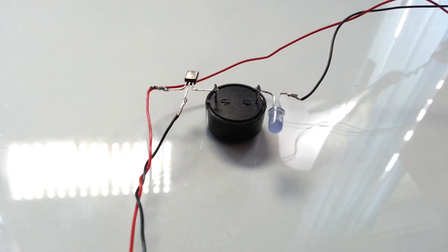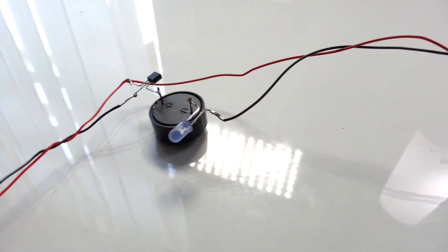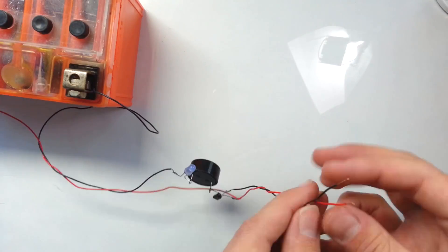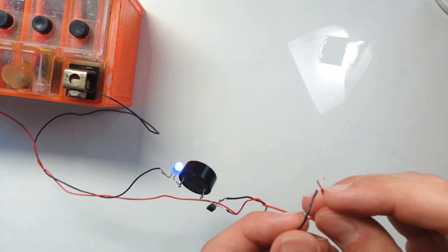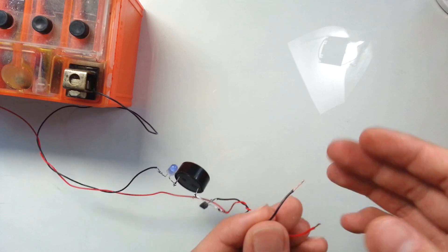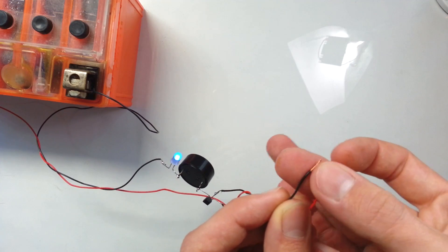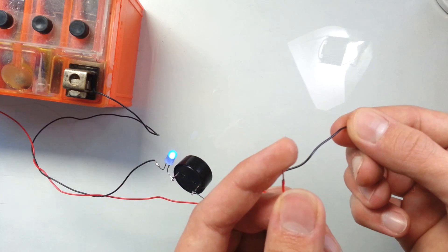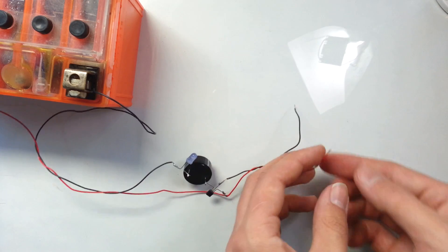After it's done you can test this part of the device. In order to test this device you need to connect it to a power source. Now when I touch black and red wire at the same time this device makes noise, which means that this device works as it's supposed to work.